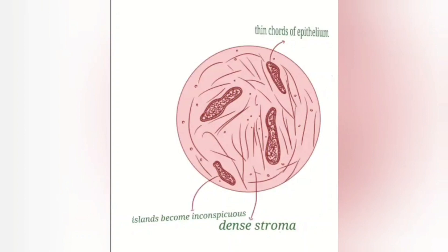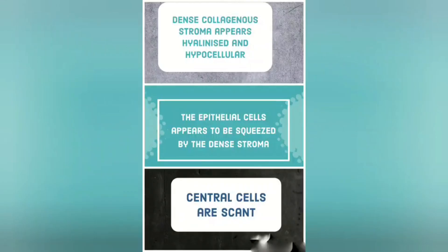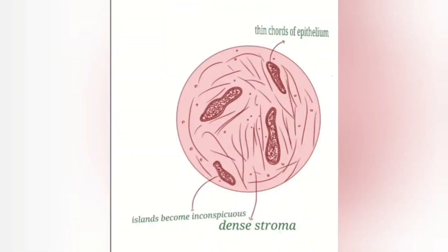In desmoplastic type of ameloblastoma, there is a very dense stroma. The dense collagenous stroma appears hyalinized and hypocellular. The epithelial cells appear to be squeezed by the dense stroma, and the central cells are scant. Because of this squeezing effect, the epithelium forms thin cords that have a kite-tail-like appearance.